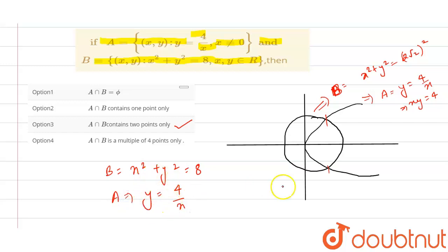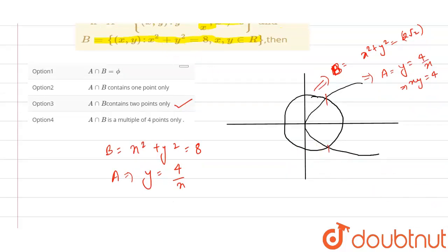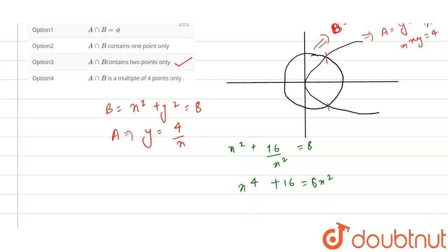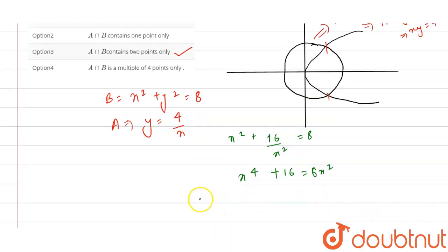We substitute the value of y into equation B. We get x² + (4/x)² = 8, which becomes x² + 16/x² = 8. Multiplying through by x², this gives x⁴ + 16 = 8x².